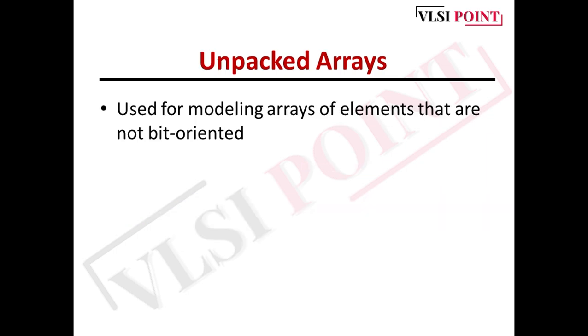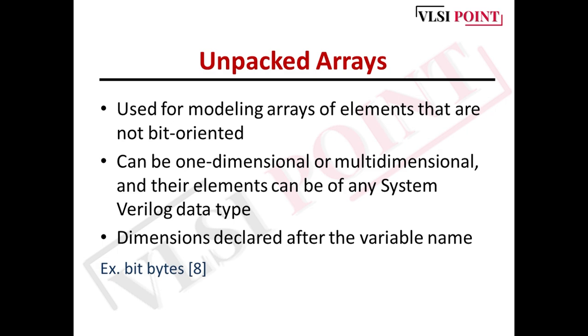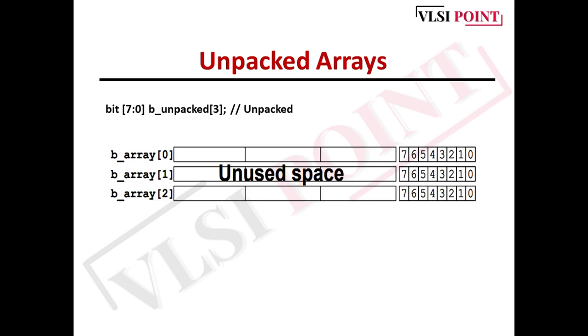Next one is unpacked array. These unpacked arrays are not bit oriented. You can see some unused space also. These unpacked arrays can be of one dimensional or multi-dimensional and similar to packed arrays, the data types can be of any Verilog data type. Here in case of unpacked array, the dimensions are declared after the variable name. However, in case of packed array, these dimensions, we have to declare before the variable name. So this is the difference. You can see the example here, bit and then the array name, and then the size. Next one is bit B_array [3][7]. So we are defining these dimensions after the variable name. This is a way you can identify whether the given example is of packed array or unpacked array. In this example, you can see some unused space are there. So it is not bit oriented.